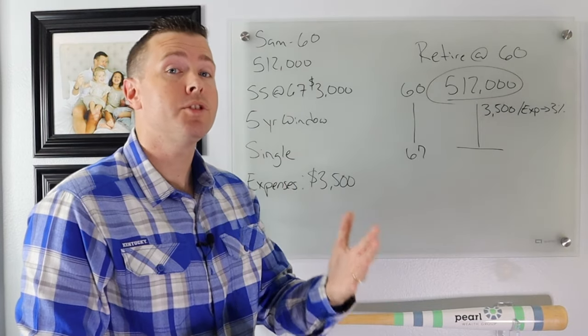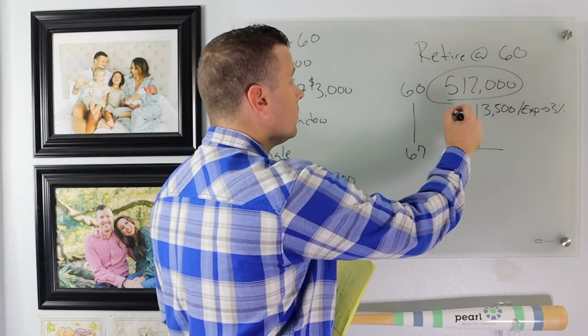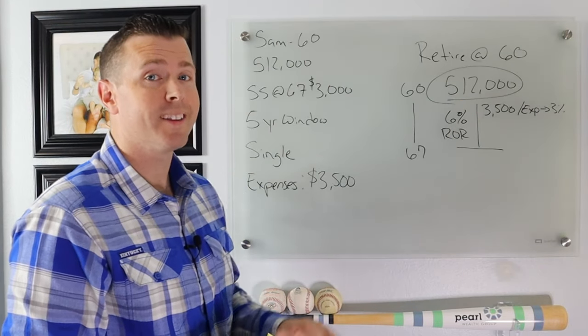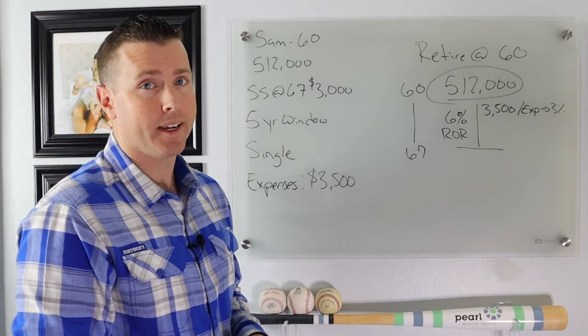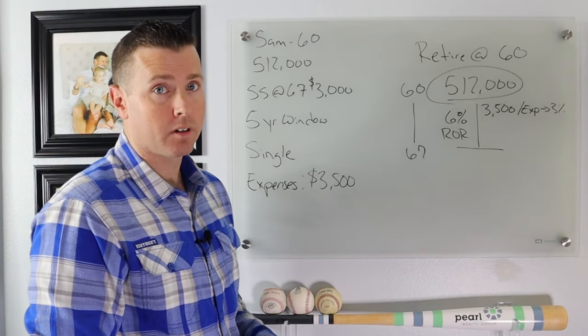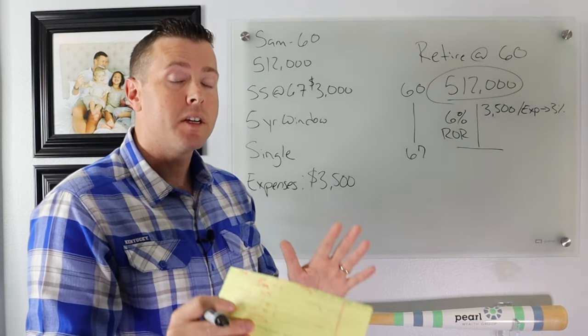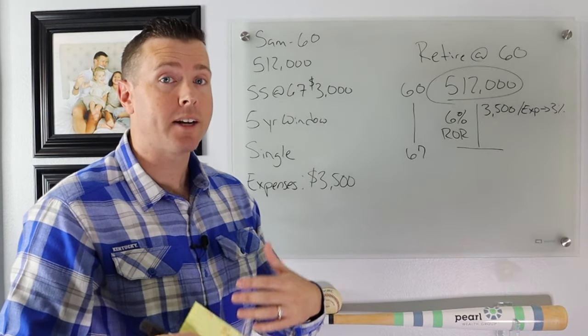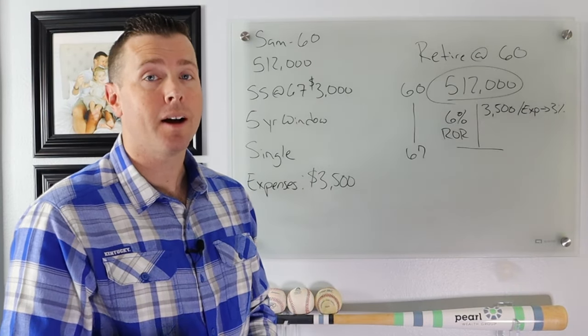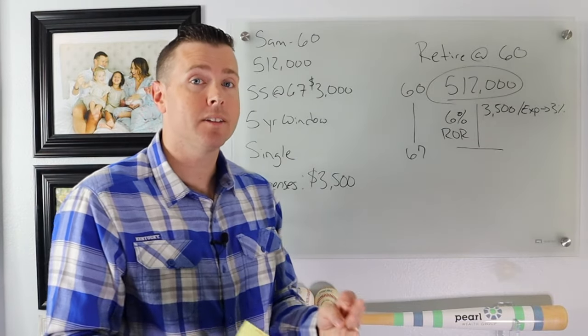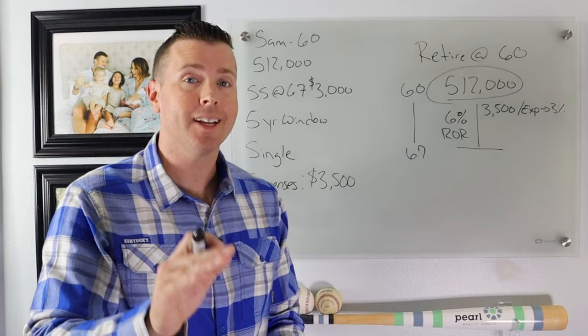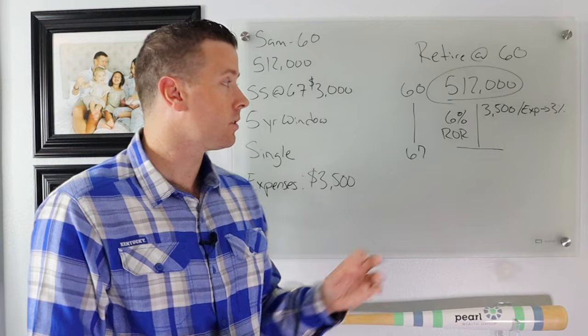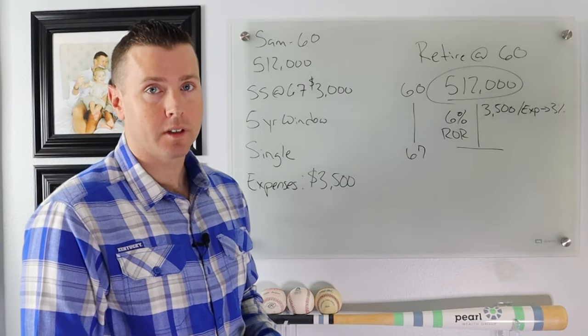Now from an assumption standpoint, we're going to assume a 6% rate of return on her money. So the $500,000 that is in her 401k is going to get a 6% rate of return. Now the reason I'm using 6% is because the market over the last 50 years has averaged about 10%. If you factor in inflation, it's averaged about 8%. We're going to manage these assets more conservatively than what the market has returned. So we're going to assume 2% behind the 8% average for a 6% rate of return.